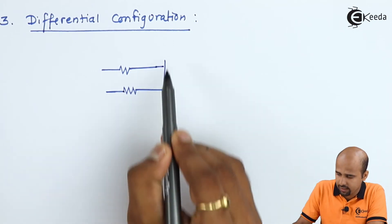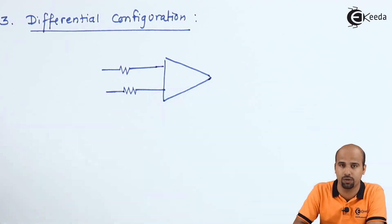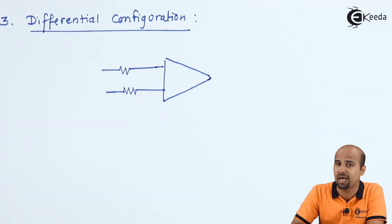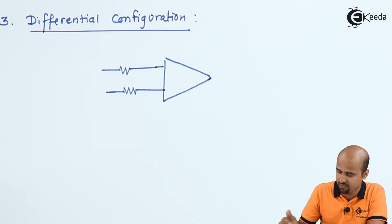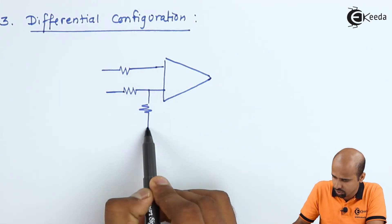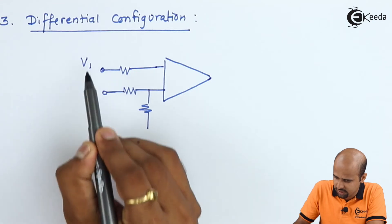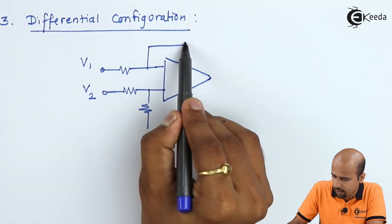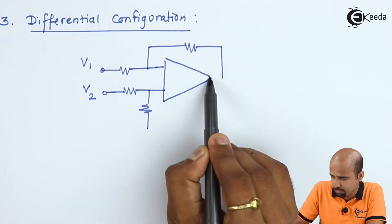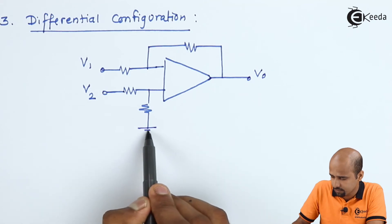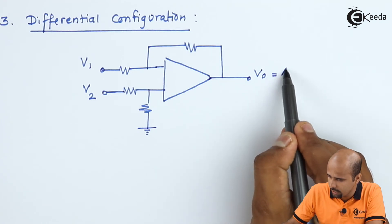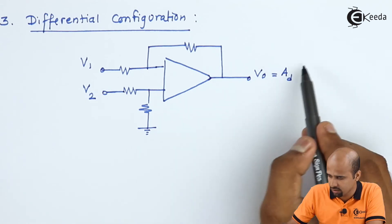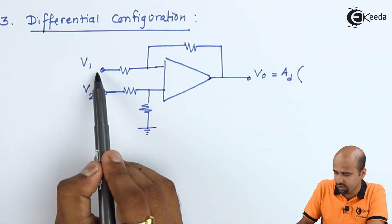That is why we name this the differential configuration. Similar to a differential amplifier where two inputs are applied and their difference is amplified at the output, here we apply input to both terminals. We call them v1 and v2. A feedback resistance is placed, and the output is expressed as Ad (the differential gain) multiplied by the difference between the two inputs.